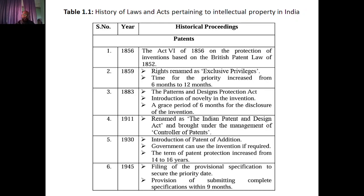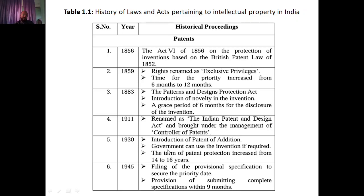Rights were renamed as exclusive privileges, and the time for priority was increased from six months to twelve months. In 1883, around 24 years later, the Patents and Design Protection Act introduced the concept of novelty in inventions and a grace period of six months for disclosure. In 1911, it was renamed the Indian Patent and Design Act, brought under the control of a Controller of Patents. In 1930, the patent of addition was introduced and the government was allowed to use an invention if required, for example vaccines.